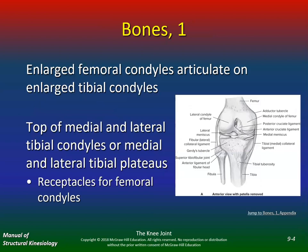What are the bones? You've got enlarged femoral condyles that articulate on the enlarged tibial condyles. Here's the femur, here's the tibia, and then you have the fibula right here. Top of medial and lateral tibial condyles, or medial and lateral tibial plateau. Here's the tibial plateau — receptacles for femoral condyles. Here's the femur, here's the medial condyle, lateral condyle, here's the tibia, tibial plateau.